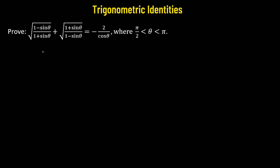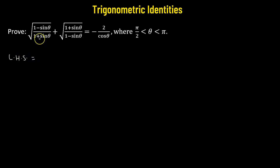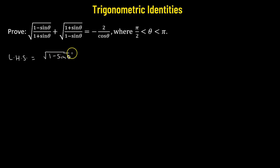Let's prove the following. We will start from the left-hand side of a given trigonometric expression. On the left-hand side, we have square root of 1 minus sine theta divided by 1 plus sine theta, but we can also rewrite it as square root of 1 minus sine theta divided by square root of 1 plus sine theta.